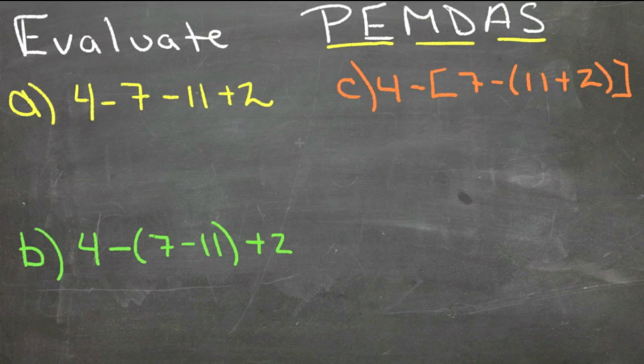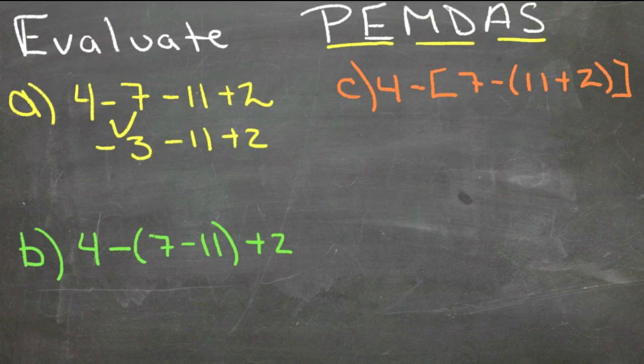Our first example here we have 4 minus 7, that gives us negative 3. So negative 3 minus 11 plus 2. Negative 3 minus 11 is negative 14, so we have negative 14 plus 2 which gives us negative 12.